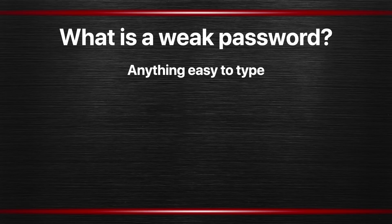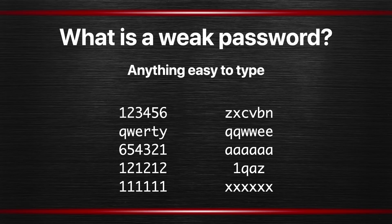Anything easy to type is also on the list — like 1, 2, 3, 4, 5, 6, QWERTY, repeating the same character over and over, or things that are all in the same row on the keyboard. These are all things that will be tried to break into your accounts.